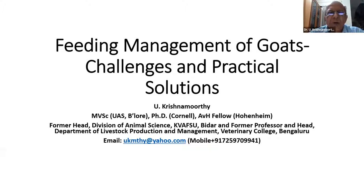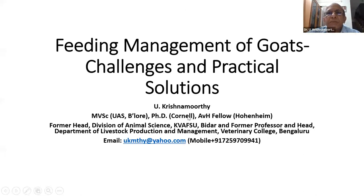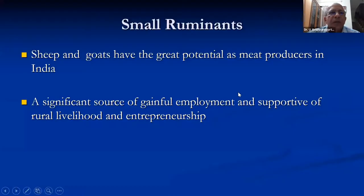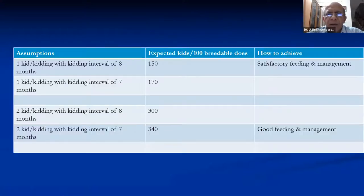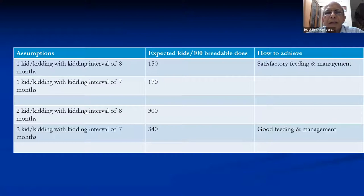Let's look at the goat population in India. We have nearly 140 million goats and something like 70 million sheep, and they are very important both from the point of food production. Sheep and goat have great potential as meat producers — they contribute to food production and are a significant source of gainful employment to support rural livelihood and entrepreneurship. Their performance is far below normally expected performance. If we compare goat production in other countries, we are pretty much on the lower side.